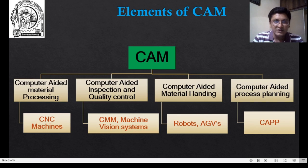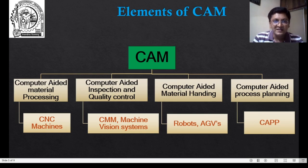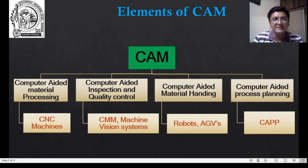Let us look at the elements one by one. The first element of CAM is Computer Aided Material Processing — when the basic manufacturing activity of material processing is performed using computers. Another domain is Computer Aided Inspection and Quality Control. The third element is Computer Aided Material Handling, and the fourth is Computer Aided Process Planning.